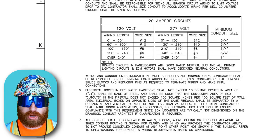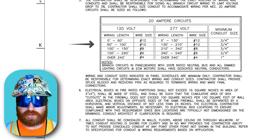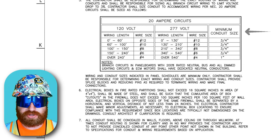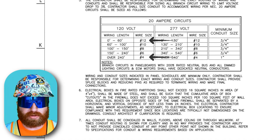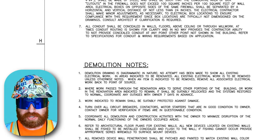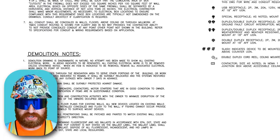Below that we've got a chart for wire sizing based on the overall length of run for 20-amp circuits. It also sizes the conduit for that wire to run in. Larger number wire sizing is actually smaller wire — so number 12 is smaller wire than number 4. We've got some more general notes including some on demolition, but we're going to move over to the symbol section.